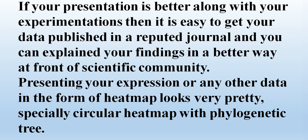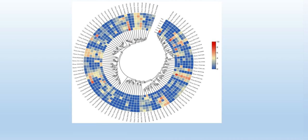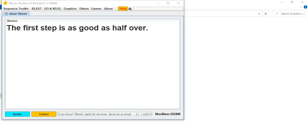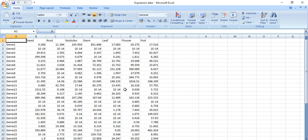Presenting your expression data or any other data in the form of a heatmap looks very pretty, especially a circular heatmap with a phylogenetic tree like this. Here is the expression data of my genes — these are the genes, this is the phylogenetic tree, and it divides the genes into different groups in a circular way. Now the question arises: how to make this circular heatmap with a tree?